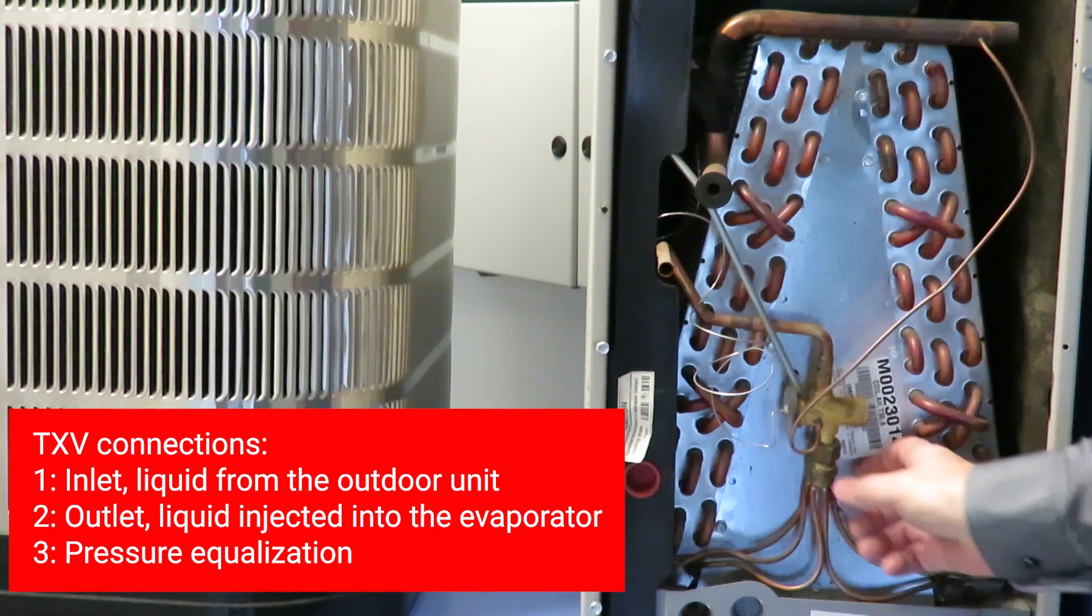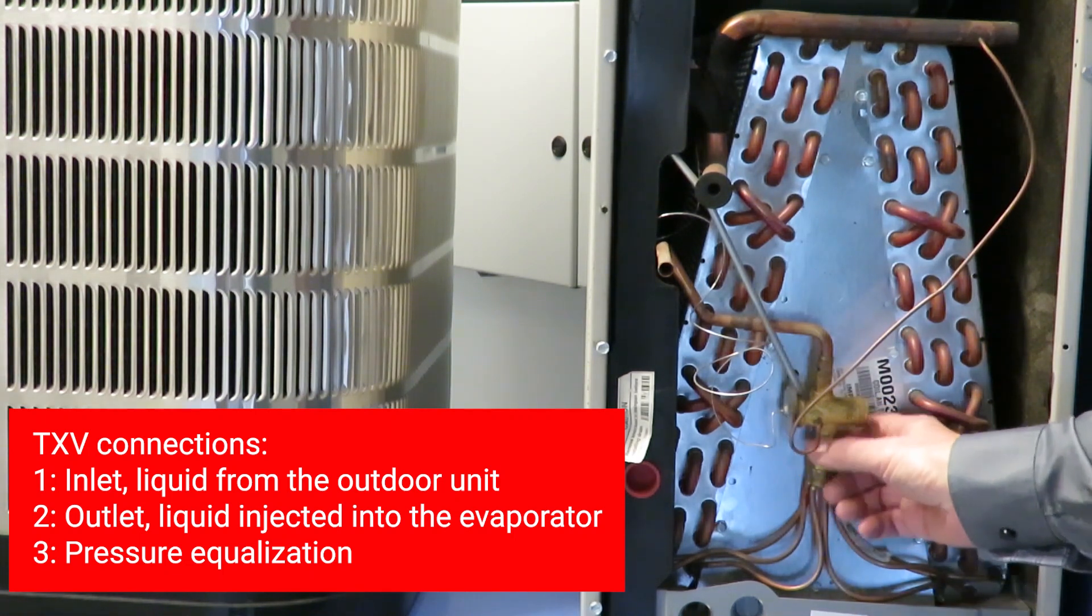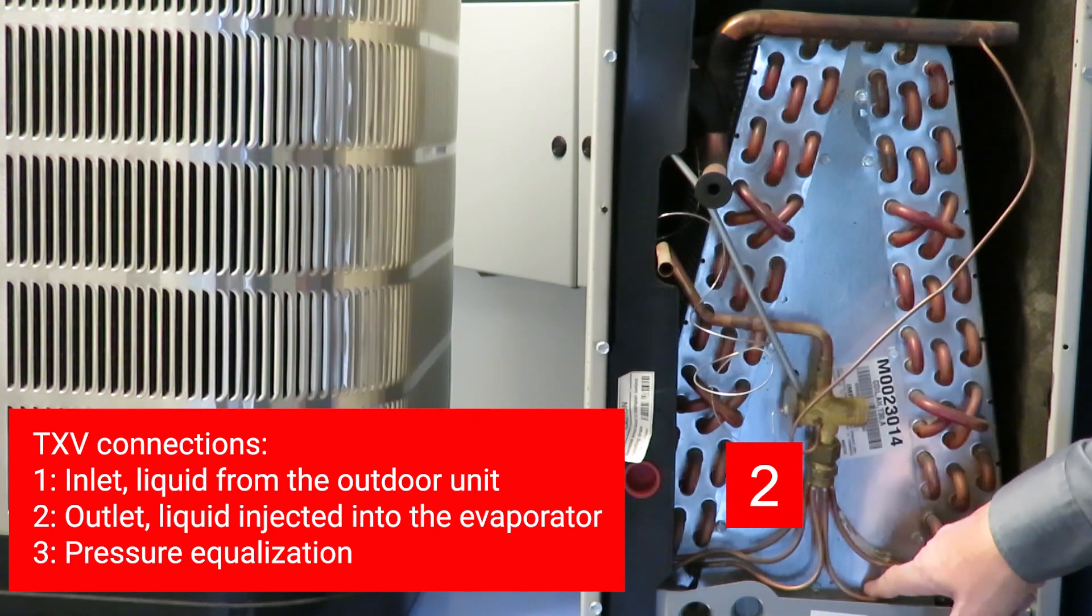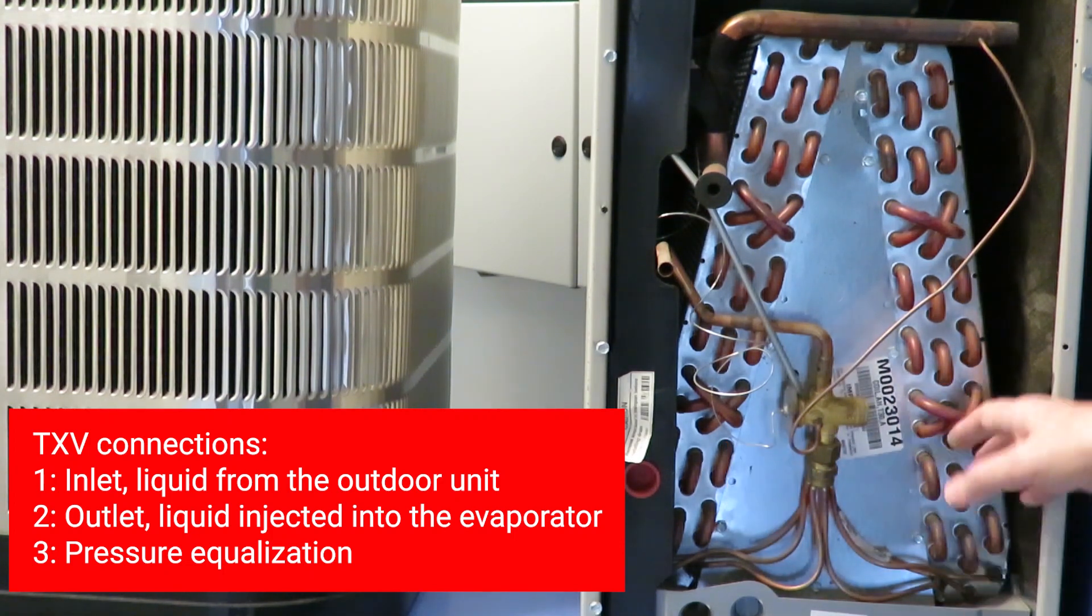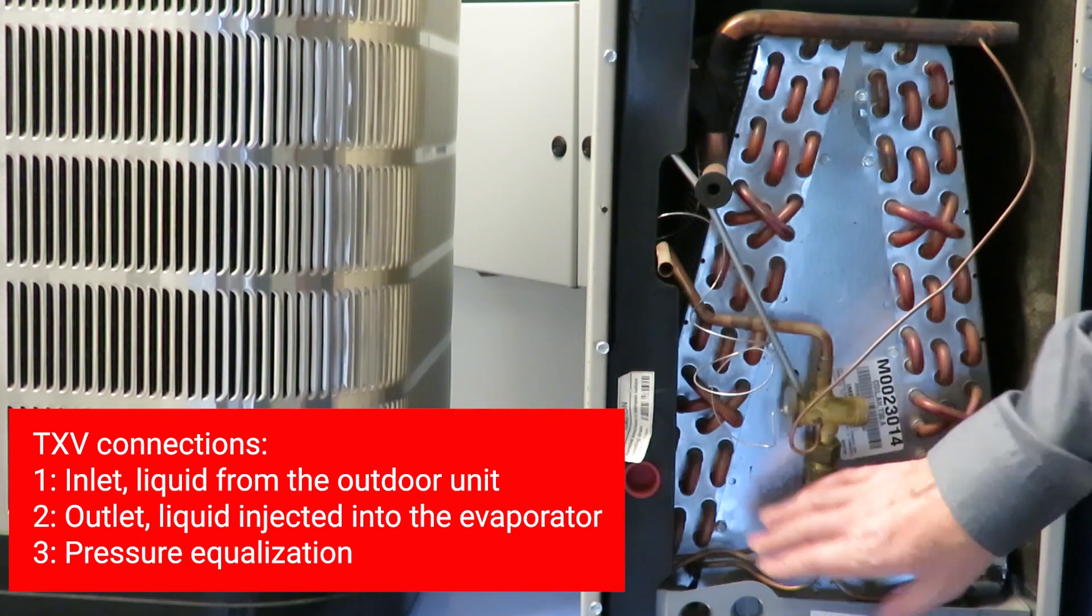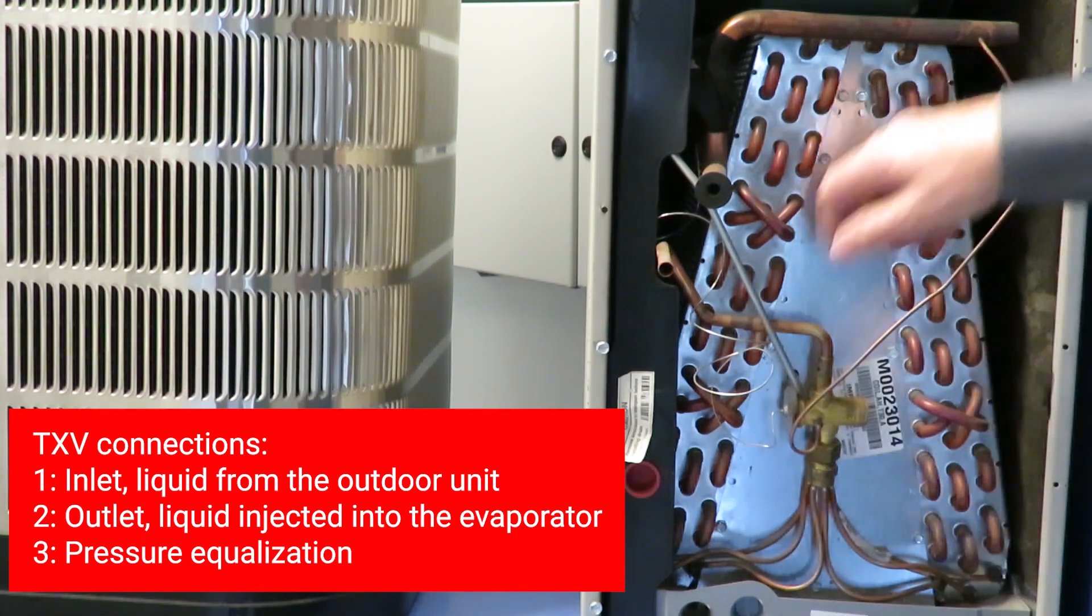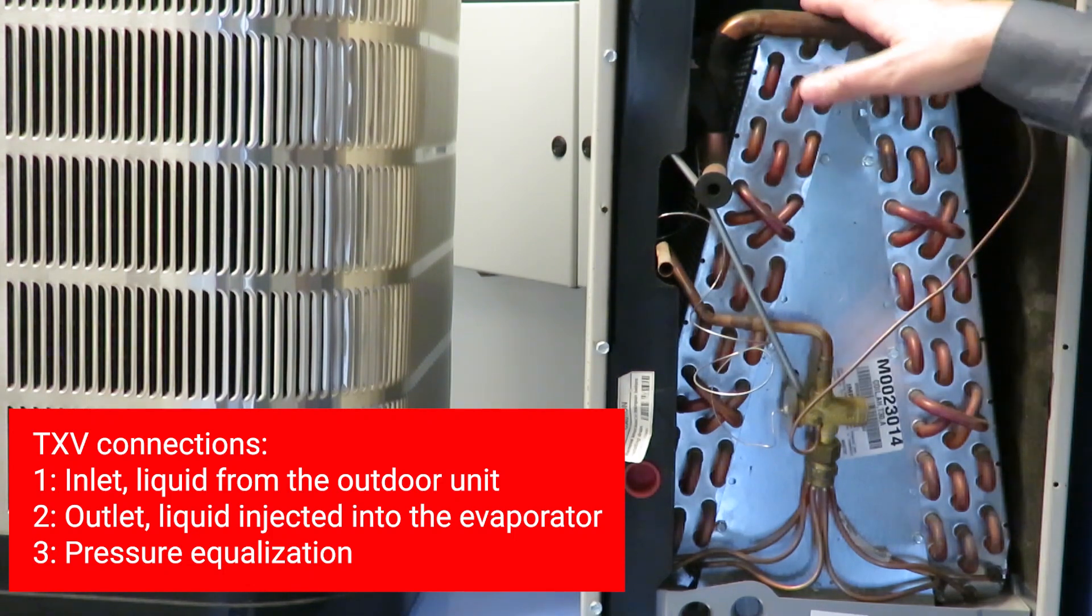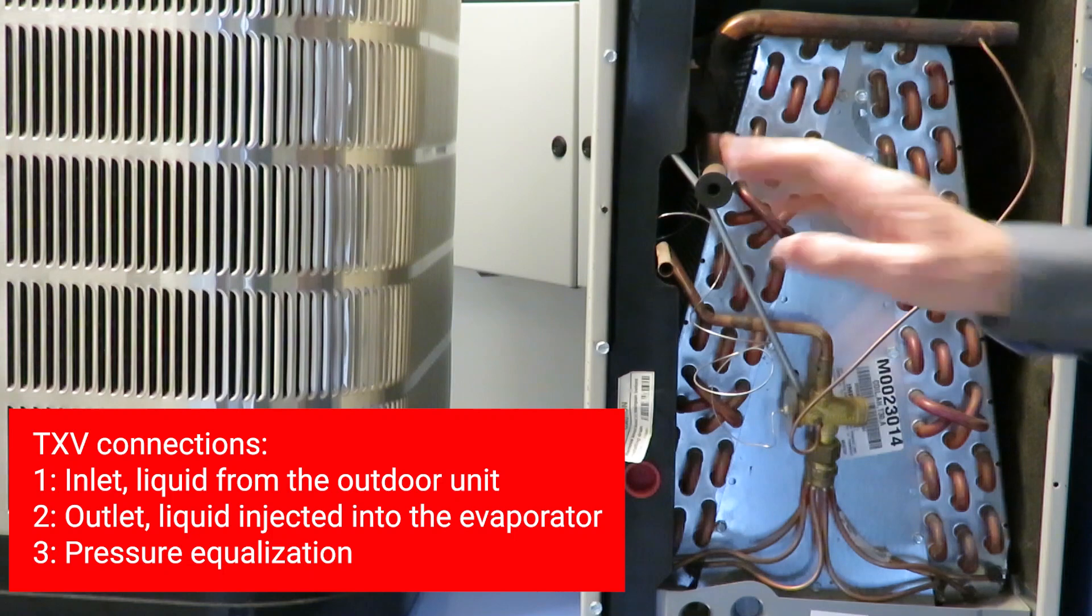We have another connector here that is the valve outlet. This goes into some smaller tubes that are connected to the evaporator. Through here the refrigerant will be passed to all these leads, and then they will come out up here and go back to the compressor.